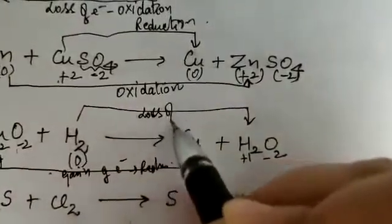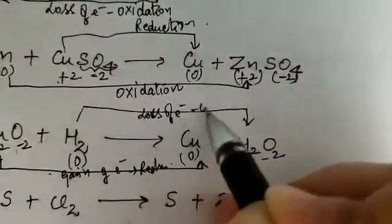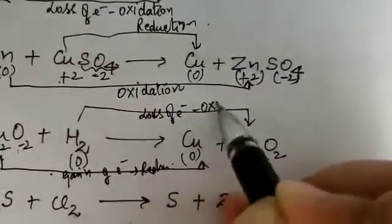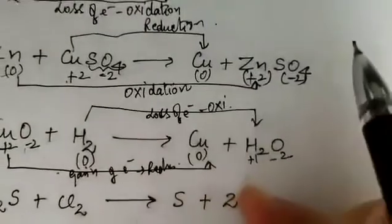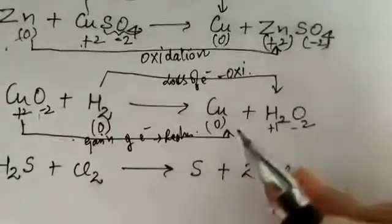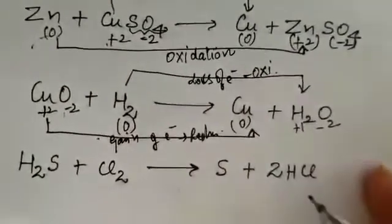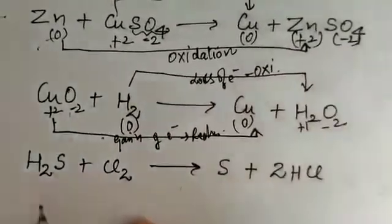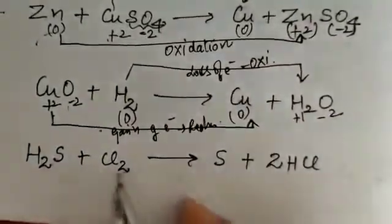Hydrogen went from zero to plus 1, which means loss of electron, and loss of electron is called oxidation.